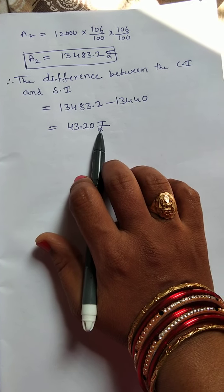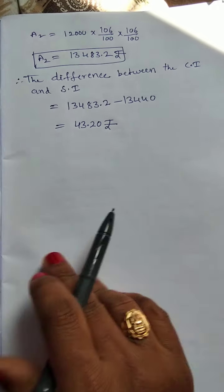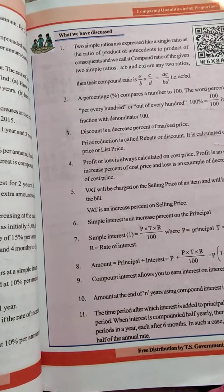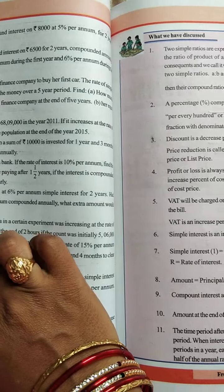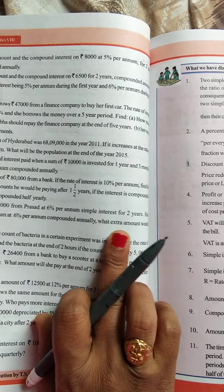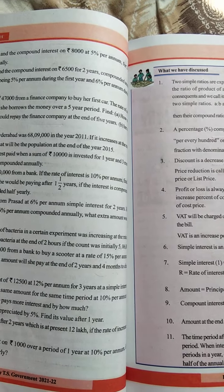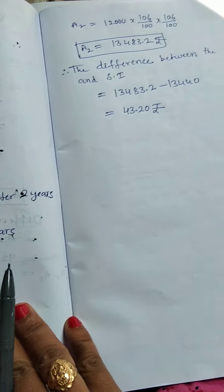This is he has to pay. Here, see, what extra amount would I have to pay is there. So, what extra amount has to pay? 43.20 rupees.